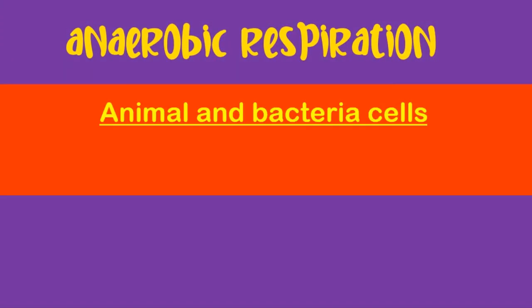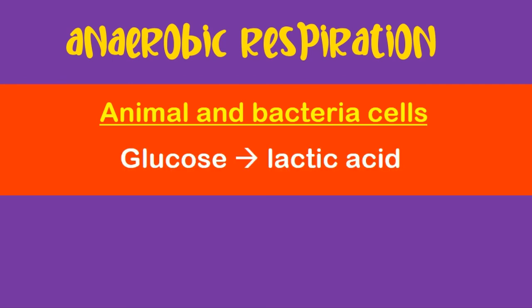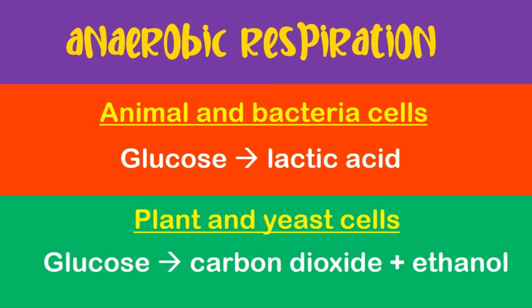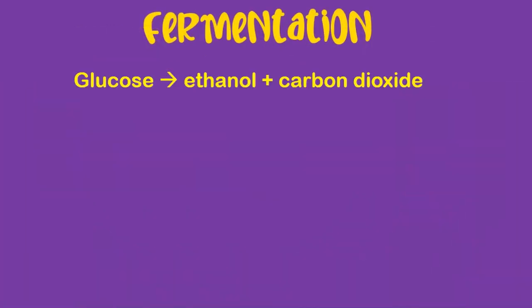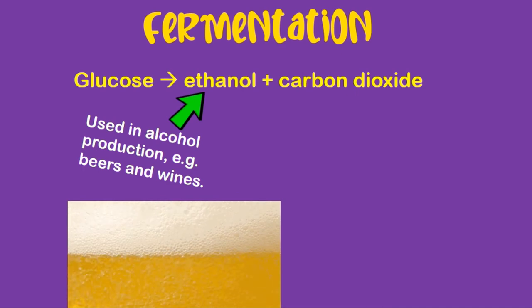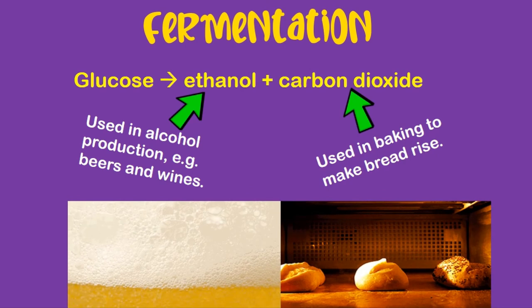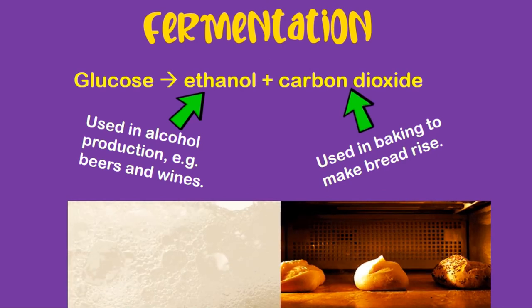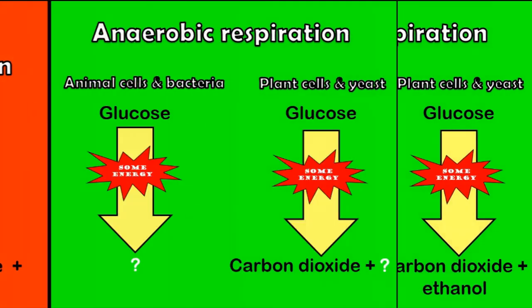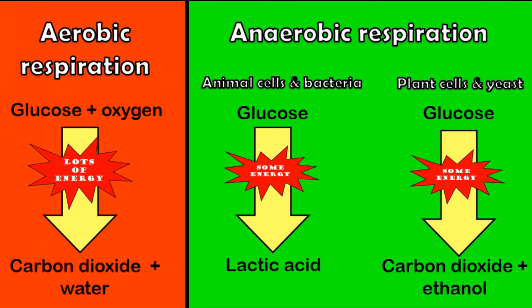The word equations for anaerobic respiration: in animals and bacteria, glucose → lactic acid + energy. In plants and yeast cells, glucose → carbon dioxide + ethanol (alcohol) + energy. These products are useful — ethanol is used to make beer or wine, and the carbon dioxide produced by yeast is used in baking to make bread rise.